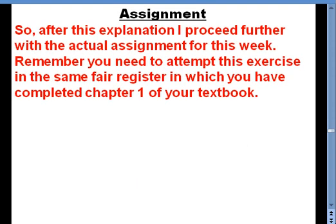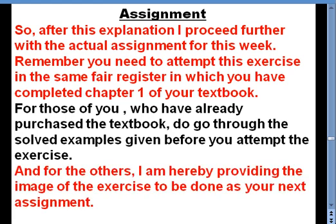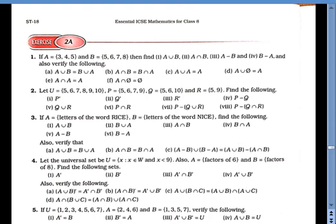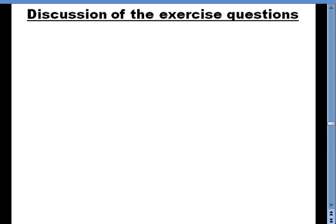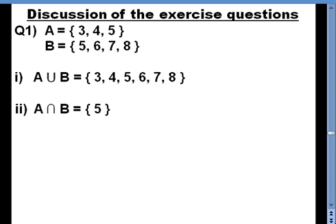After this explanation, let us move ahead with the assignment. You need to attempt this exercise in the same fair register in which you completed chapter one. For those who have purchased the textbook, go through the solved examples before attempting. For the rest, I'm providing the image of the exercise as your next assignment. This is Exercise 2A with five questions. Now let's discuss the questions. A equals {3, 4, 5} and B equals {5, 6, 7, 8}. A union B equals {3, 4, 5, 6, 7, 8}. A intersection B equals {5}.